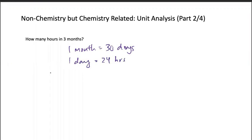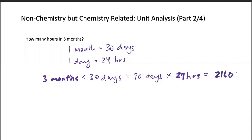So now, if we have three months, we times it by 30 days, and then we have 90 days. And from 90 days, we times it by 24 hours, because we know that one day is 24 hours. So we have 2160 hours.